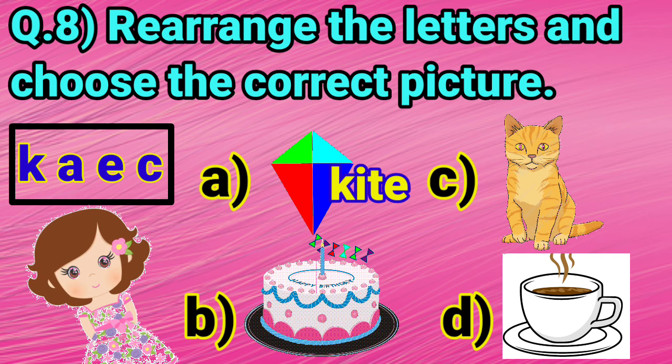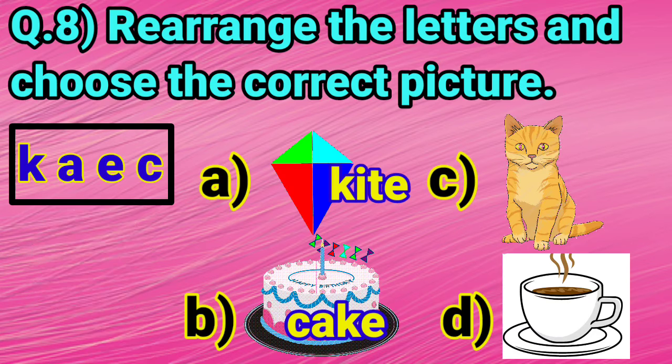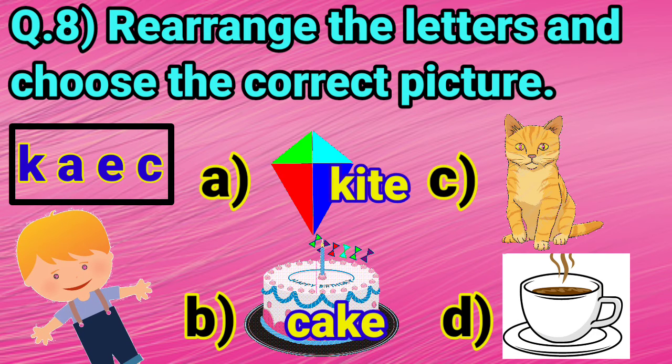Option B is a cake. Yes, C, A, K, E, cake. Option C is a cat. C, A, T, cat.